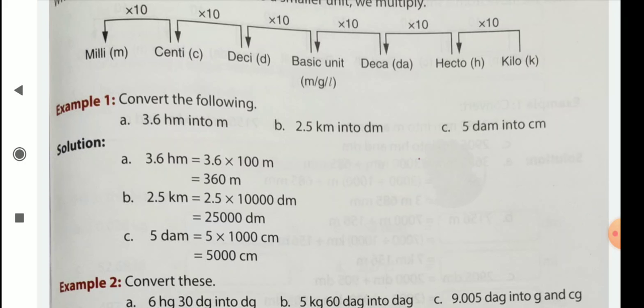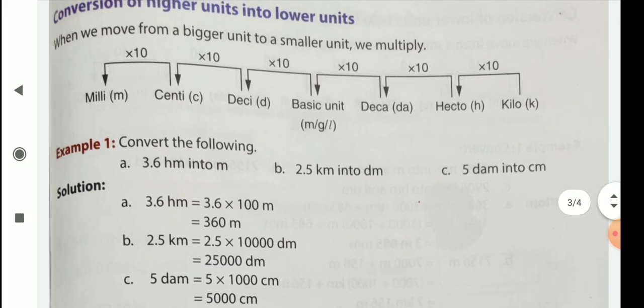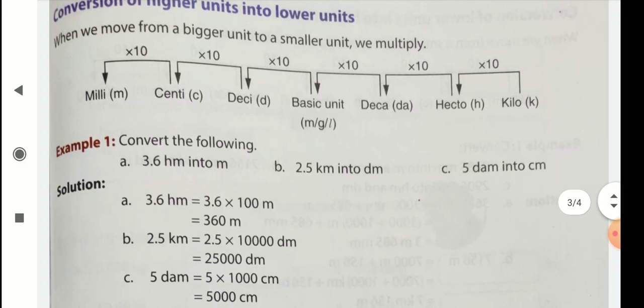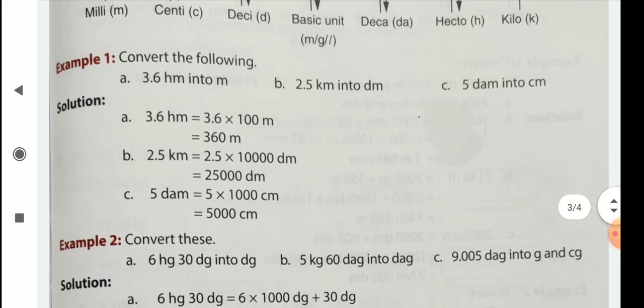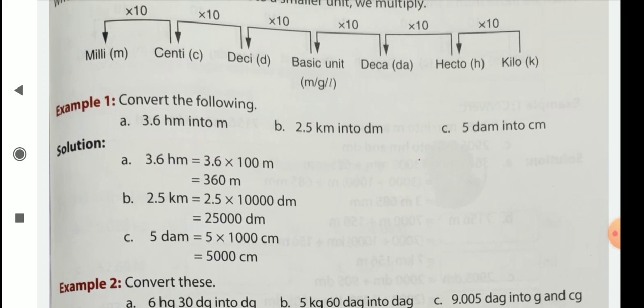Convert the following: 3.6 hectometer into meter. Hectometer to meter means here, you see the chart. Hectometer, then decameter, then meter. Means 2 tens. Means 100. So here we multiply 100. So like this children, you see the values and the places, then you multiply.